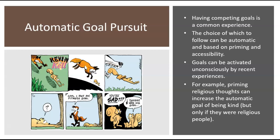Having competing goals is really common — we experience them all the time and we have to make a choice of which goal to pursue. That choice often happens based on automatic processing, automatic thinking. It could be as serious as: do I pay attention to my phone or do I pay attention to the road? We often choose the goal that's most automatically accessible to us.